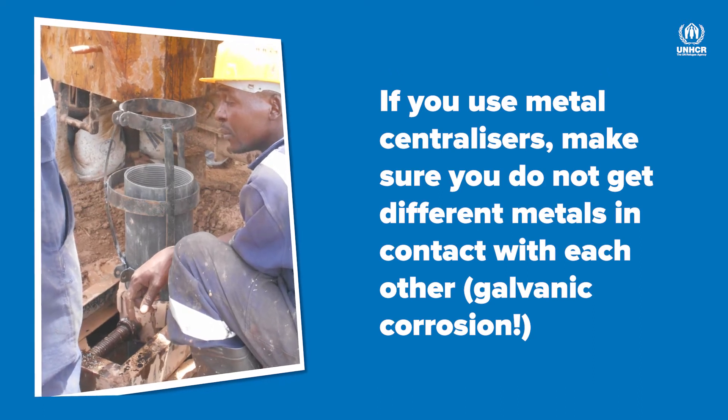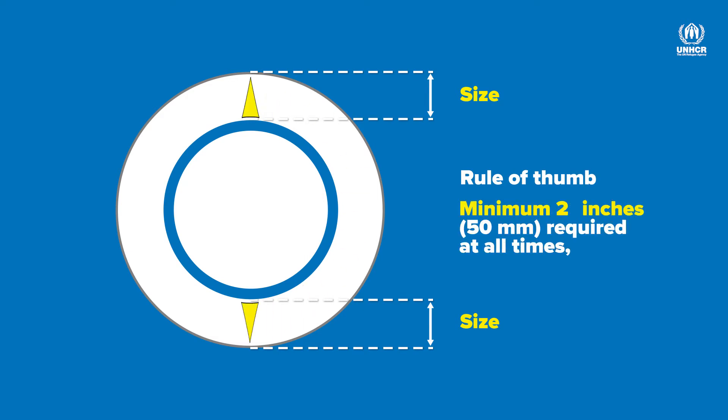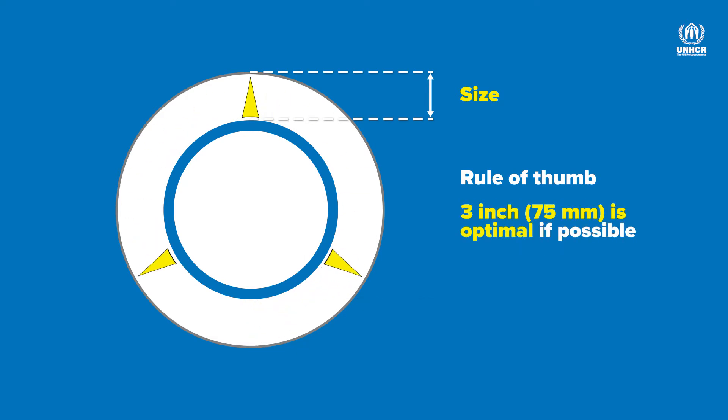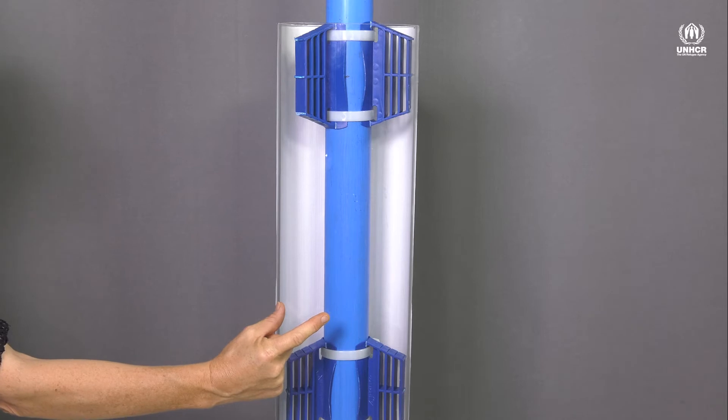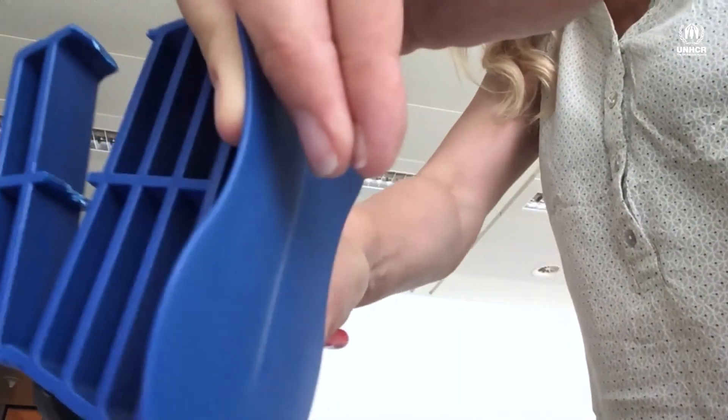And what about the choice of the size? The size of the centralisers is determined by the space between the casing and the borehole walls. This space should be consistently two inches and an optimum of three inches all around the borehole. But don't worry, most centralisers are adjustable to a range of different diameters and borehole.